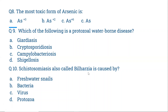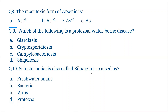Question 10: Schistosomiasis, also called bilharzia, is caused by schistosomes — a parasite. When freshwater snails release their fecal matter in freshwater, the schistosomes are also released. That is how freshwater snails contaminate drinking water, ultimately causing schistosomiasis, also known as bilharzia or snail fever.